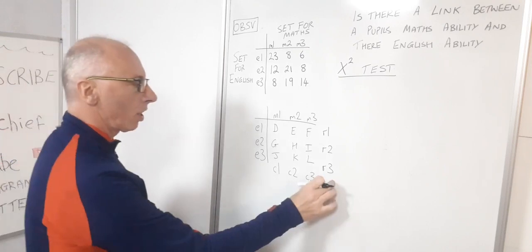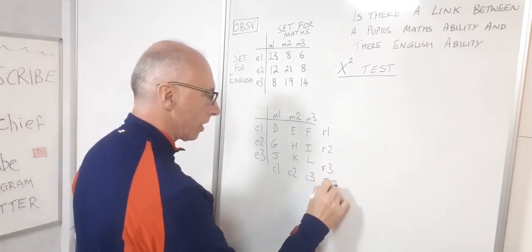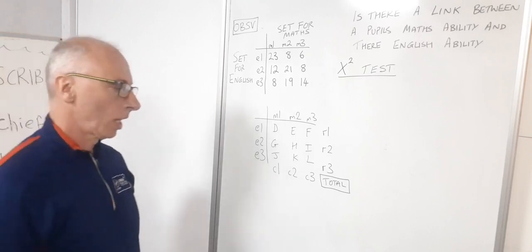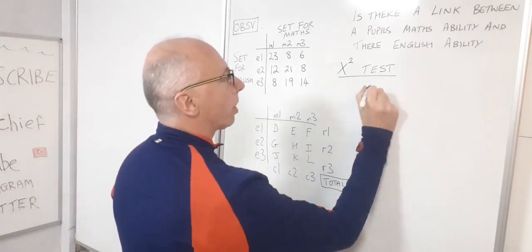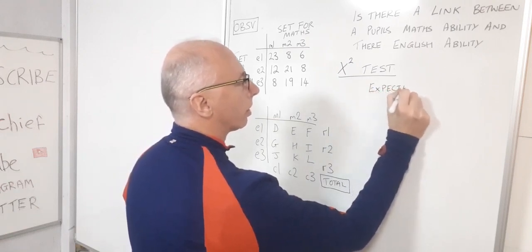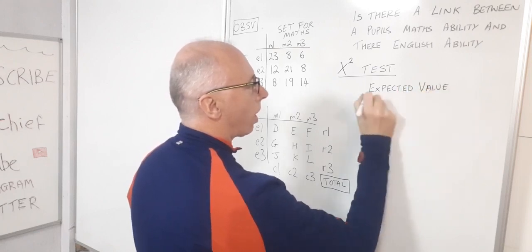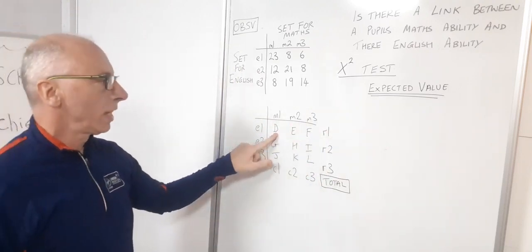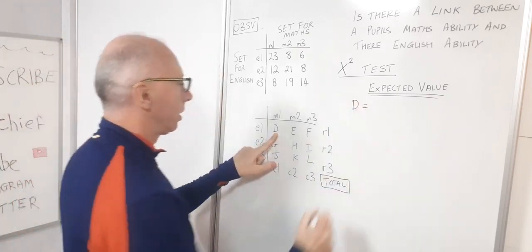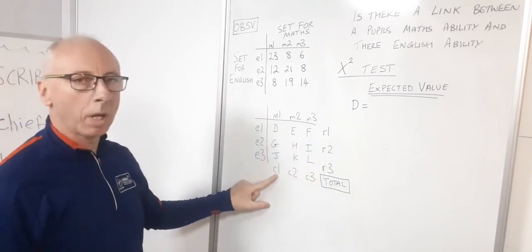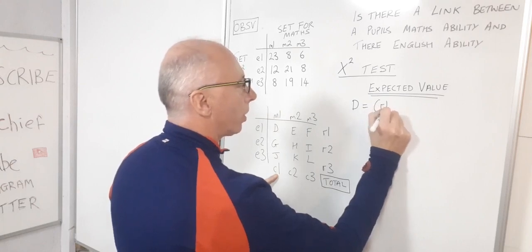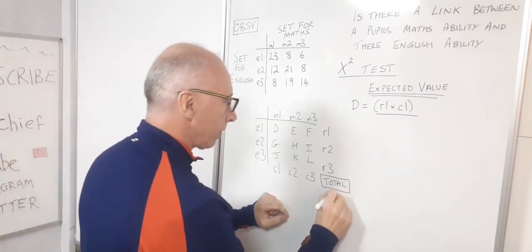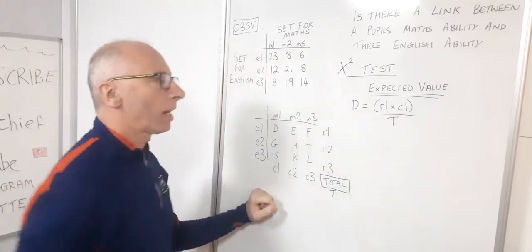I also need the grand total for all of these — that's an important part of the calculation. So the expected value for each box: for D, that would be row one total multiplied by column one total — R1 times C1 — and then we divide that by the total T. So that's how we calculate that one.